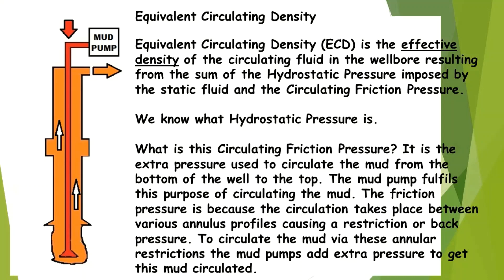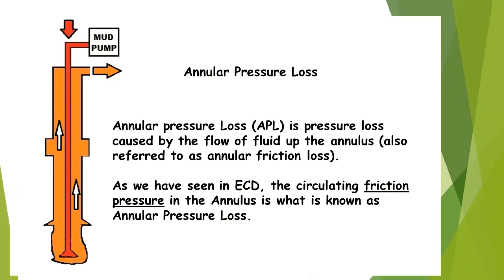Equivalent circulating density is the effective density of the circulating fluid in the wellbore, resulting from the sum of the hydrostatic pressure imposed by the static fluid and the circulating friction pressure. The circulating friction pressure is the extra pressure used to circulate the mud from the bottom of the well to the top, fulfilled by the mud pumps. This friction pressure arises because circulation takes place between various annulus profiles causing restriction. Annular pressure loss is the pressure loss caused by the flow of fluid up the annulus, also referred to as annular friction loss — this is what is known as circulating friction pressure in the annulus.